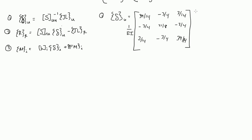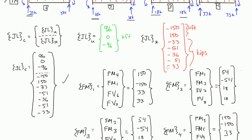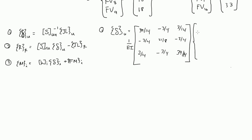We also need to multiply this by our joint load unrestrained matrix, or column vector. We figured out what that was — it was 96, 0, negative 96. So down here I'm going to put 96, 0, negative 96, and if we do our matrix multiplication — row times column — we're going to get 1728/7, 0, and negative 1728/7.